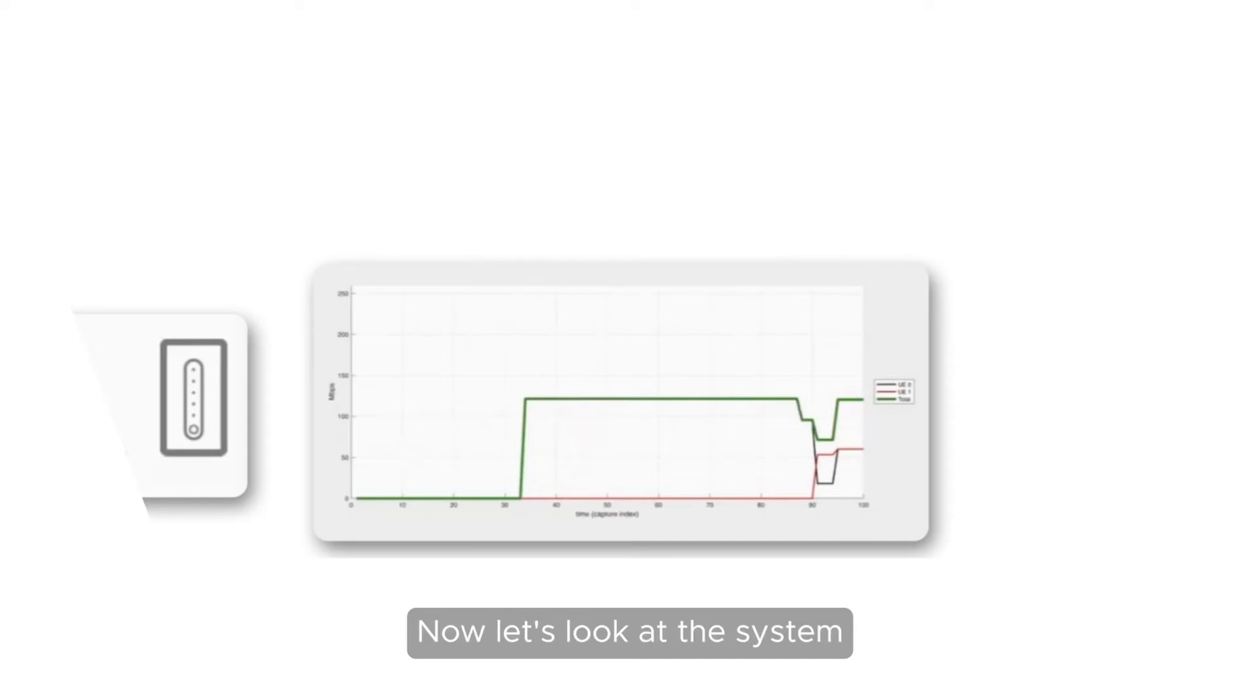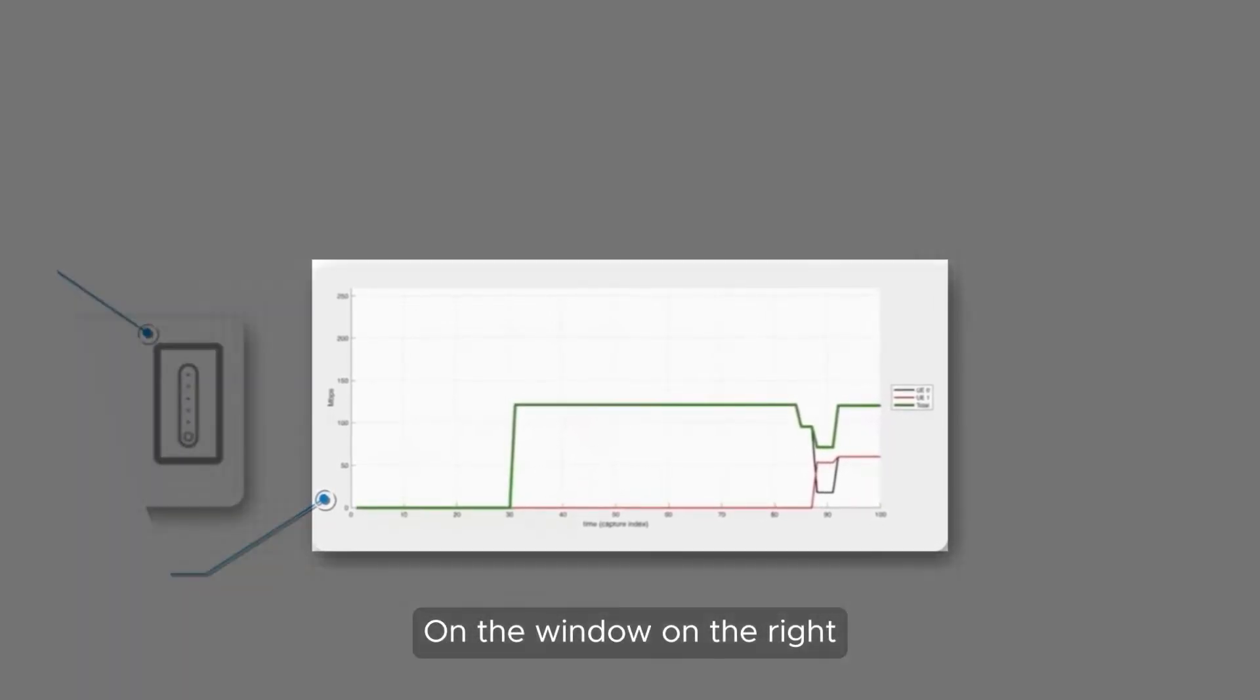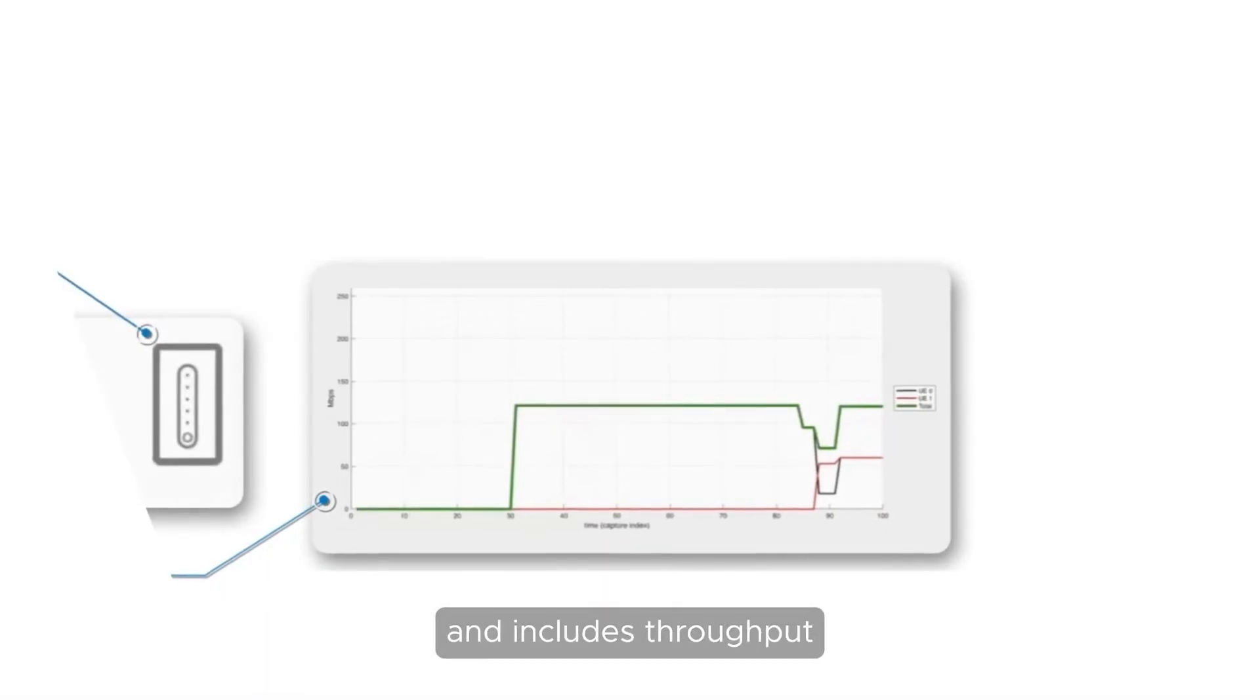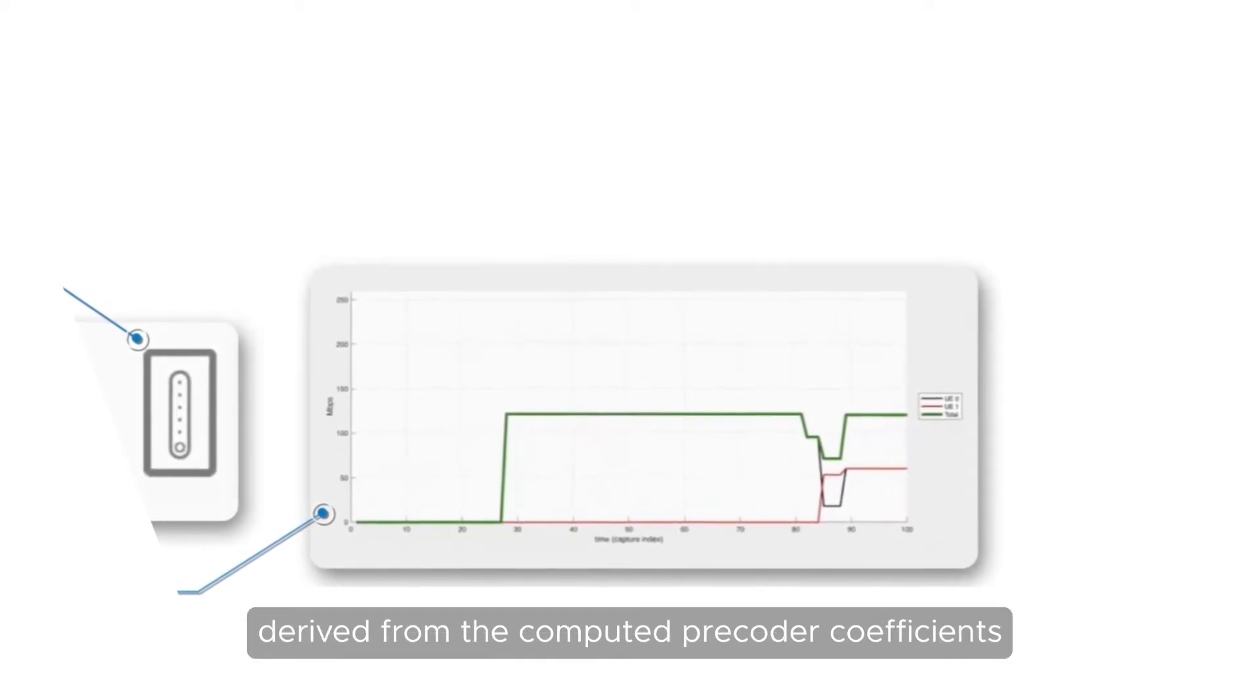Now, let's look at the system performance measurements with two UEs attached. On the window on the right, displays measurements from the Cohere software. The thick black trace is the most recently computed beam for the first UE. The thick red trace is the most recently computed beam for the second UE, and includes throughput and a representation of the beams derived from the computed pre-coder coefficients.